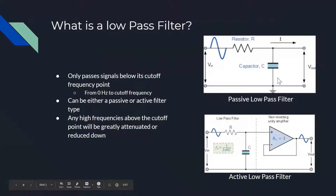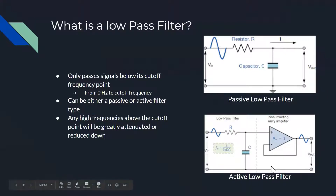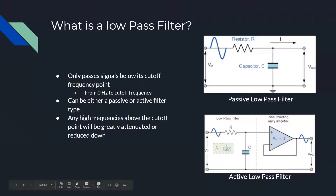As shown in the pictures to the right, the top one is a passive low-pass filter and the bottom is an active low-pass filter. The difference is because the active low-pass filter contains an op-amp, and an op-amp needs to be powered by an outside voltage source — hence it's an active low-pass filter.